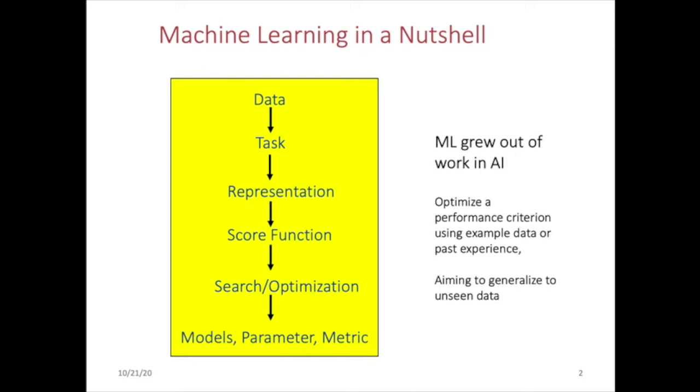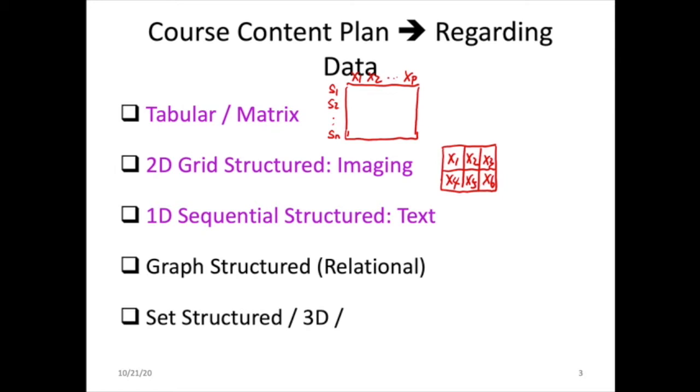So just a kind of recap in a nutshell, we try to categorize all the machine learning algorithms using six disentangled factors: data angle, task angle, representation angle, scoring function angle, search angle, and model parameter or metric angle.